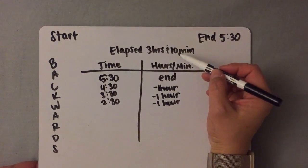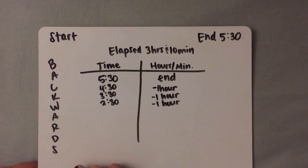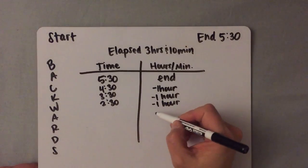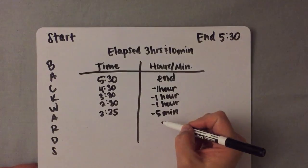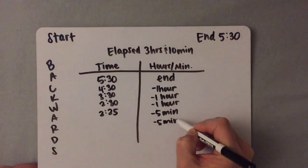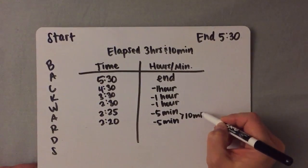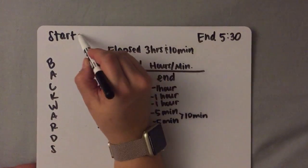Now you are going to count back the minutes — 10 minutes is how much elapsed time has passed. So you need to figure out 10 minutes before 2:30. You can take away as little or as much as you want. You could take away 5 minutes and get to 2:25, and then do that one more time to use up all 10 minutes of elapsed time, which takes you to 2:20. You could also do this all at once with 10 minutes — it's really up to you and how comfortable you feel. So right now, the start time is 2:20.